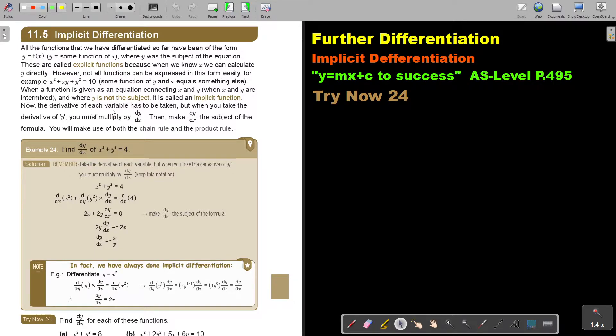Now, the derivative of each variable has to be taken. But when you take the derivative of y, you must multiply by dy over dx. So you take every function, the derivative. If it's in term of x, then you take it towards x. And otherwise you take it towards y. But if you take it towards y, then you must multiply that term with dy over dx. Then you make dy over dx the subject of the formula. You will make use of both the chain rule and the product rule.